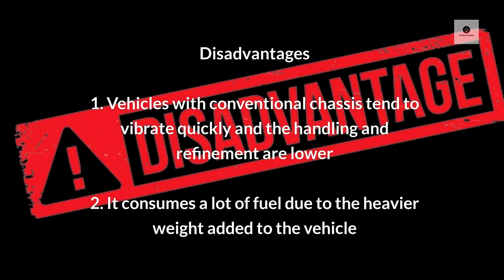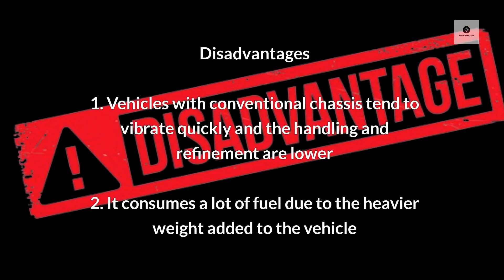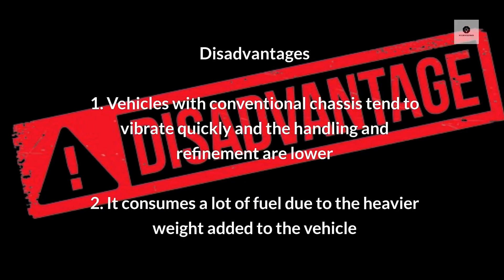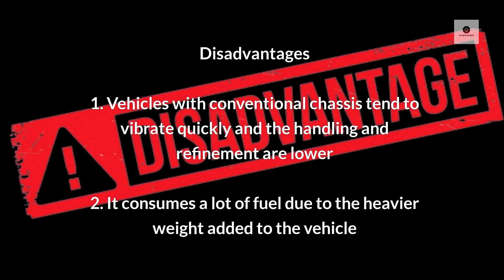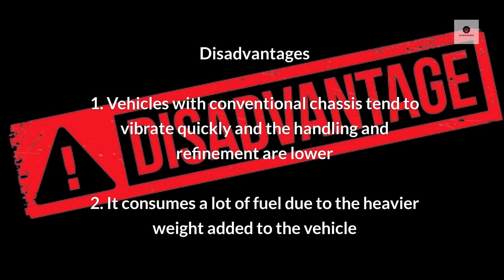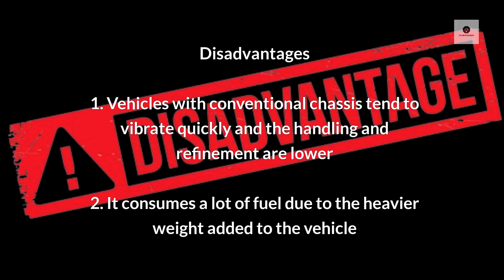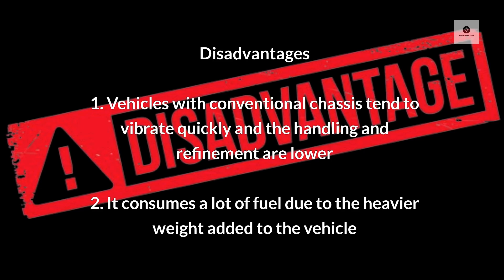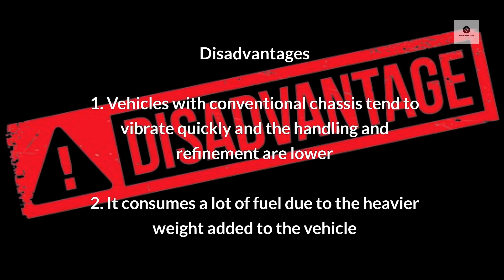Disadvantages of conventional chassis: Vehicles with conventional chassis tend to vibrate quickly and the handling and refinement are lower. It also consumes a lot of fuel due to the heavier weight added to the vehicle.